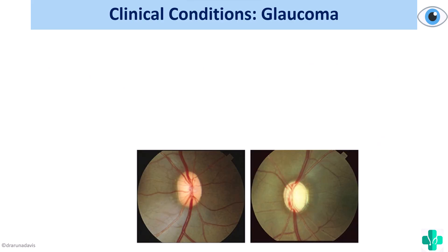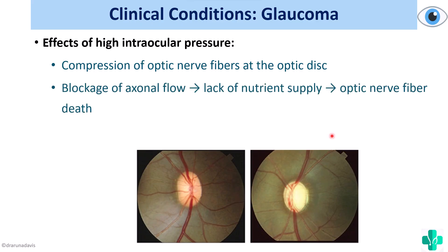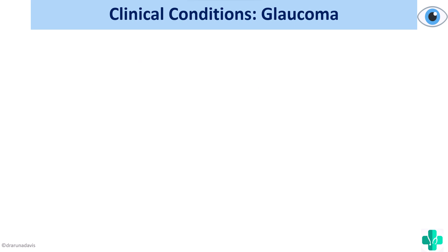When an ophthalmologist examines the fundus, increased intraocular pressure causes compression of the optic nerve fibers at the optic disc. There is also blockage of axonal flow and lack of nutrient supply, which can lead to death of optic nerve fibers. Additionally, there can be compression of the retinal arteries, reducing retinal blood supply. So accumulation of aqueous humor leads to increased IOP, which causes death of optic nerve fibers and compression of the retinal arteries.